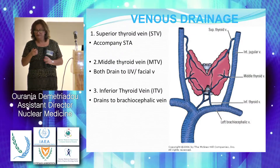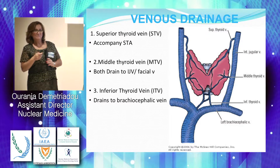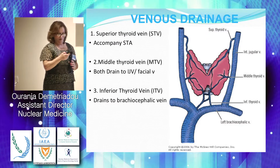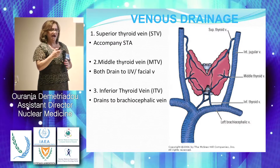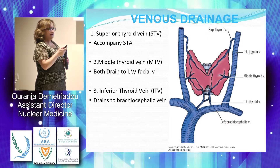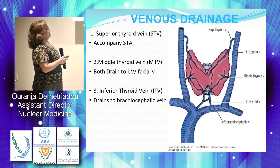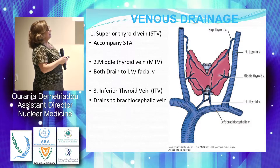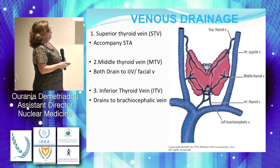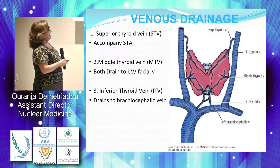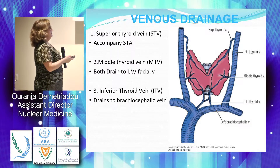The venous drainage is done by three veins. Although we have two main arteries, we have three veins. The superior thyroid vein accompanies the superior thyroid artery. The inferior thyroid vein comes from the brachiocephalic vein, and we have the middle thyroid vein.